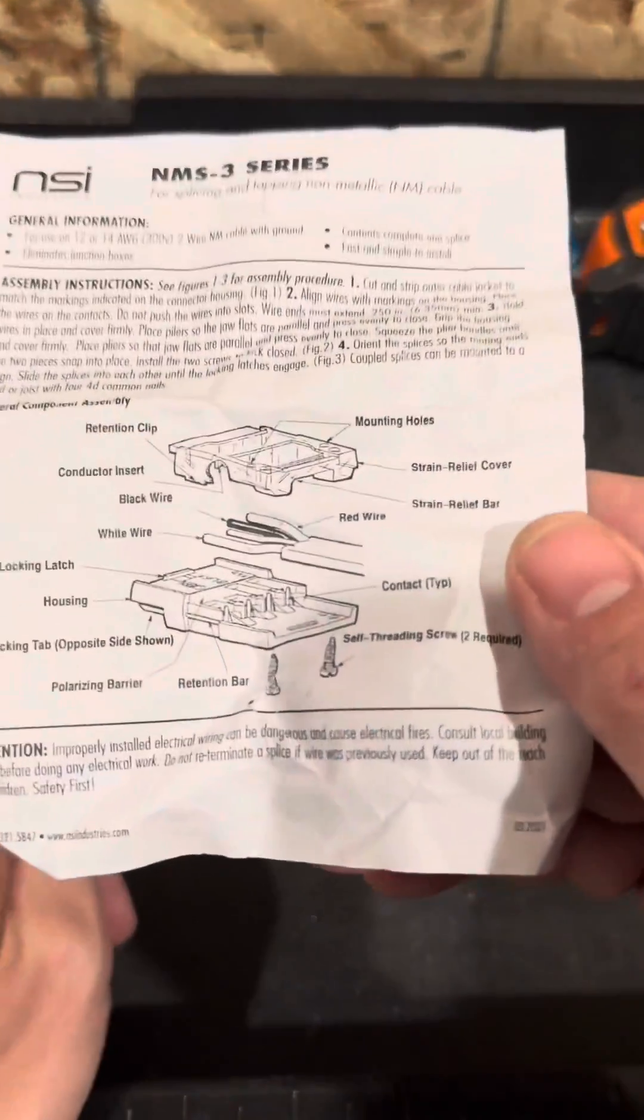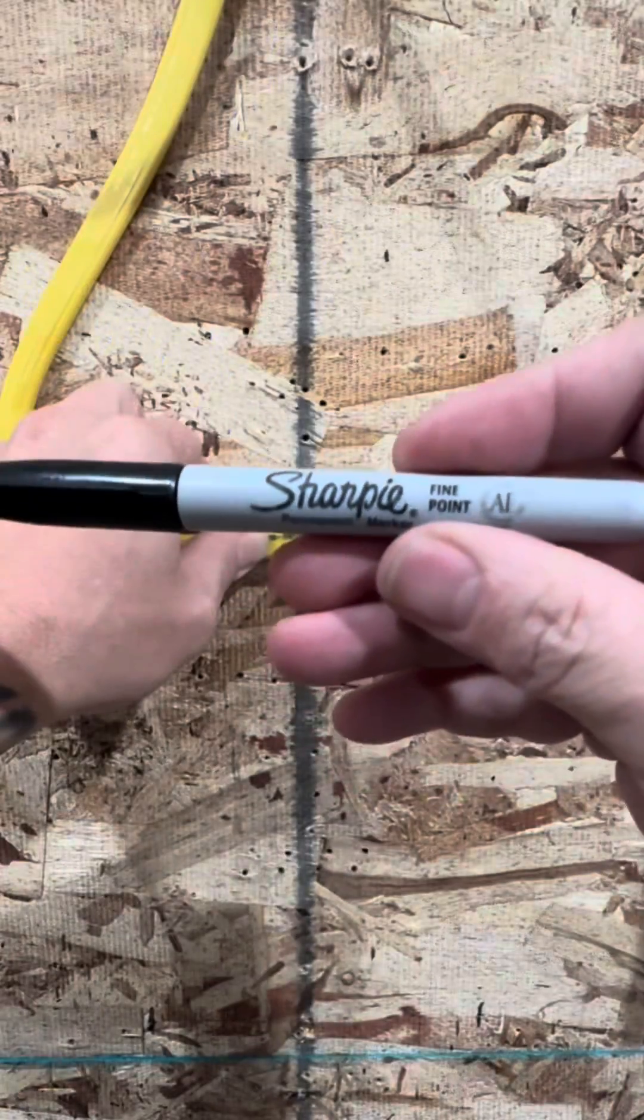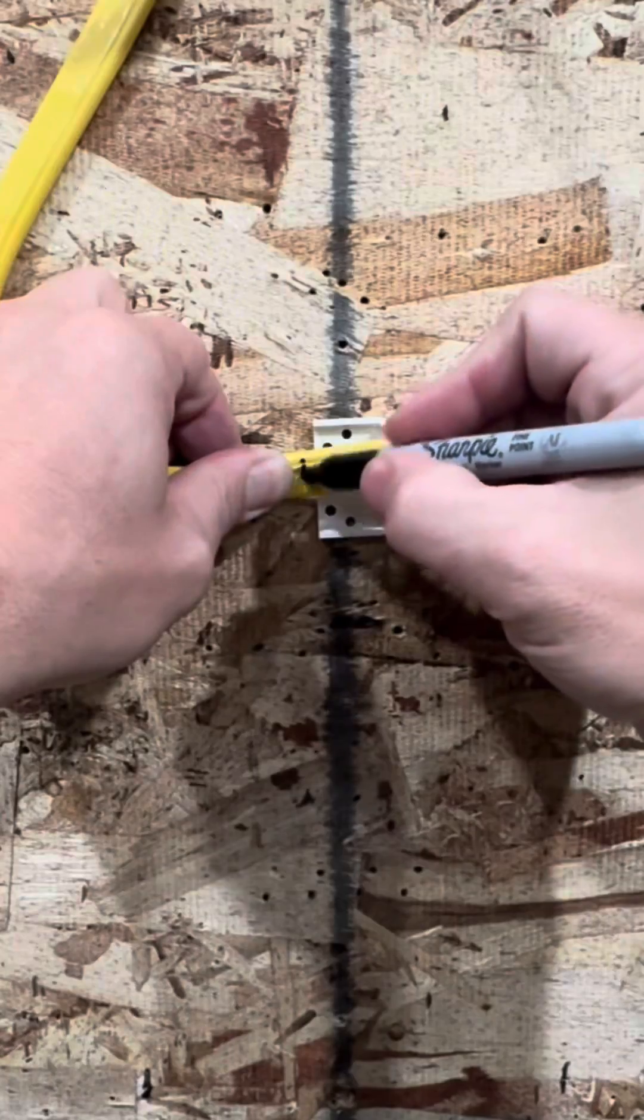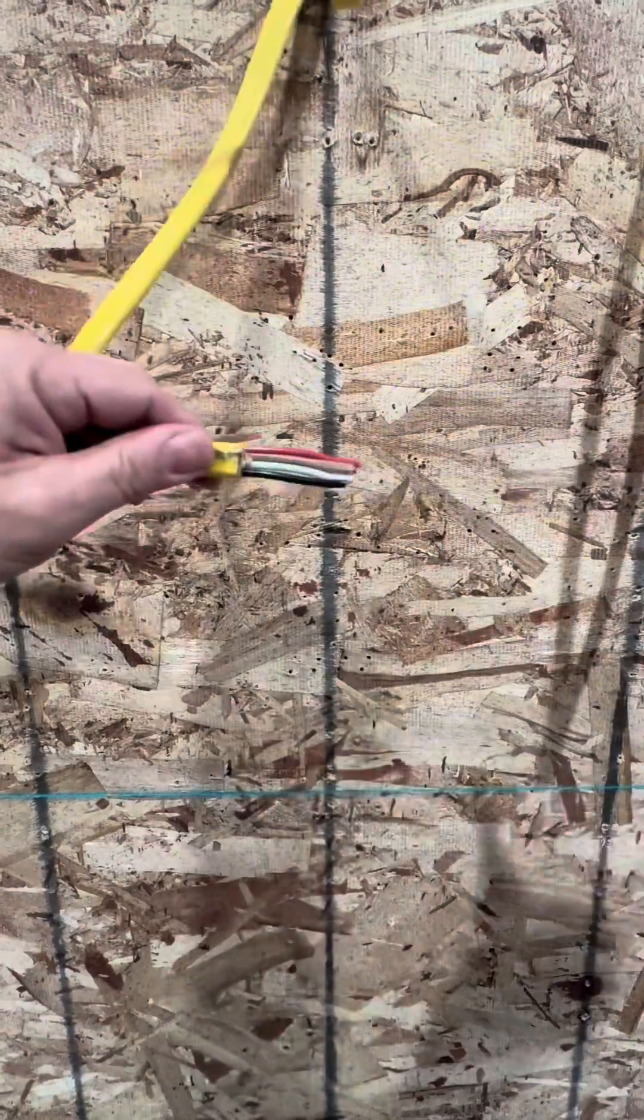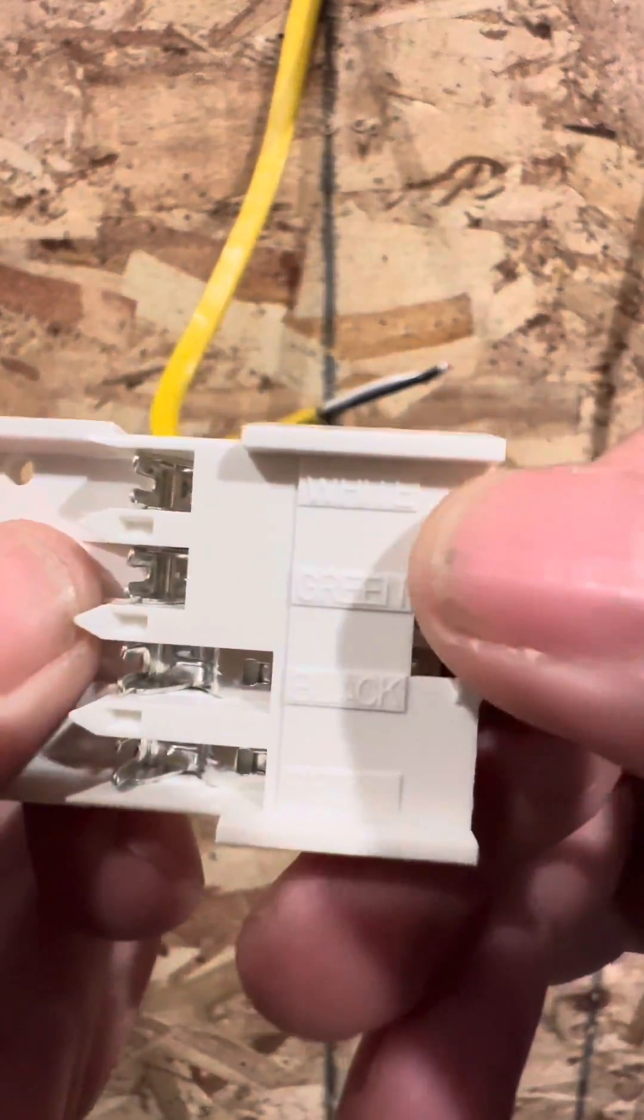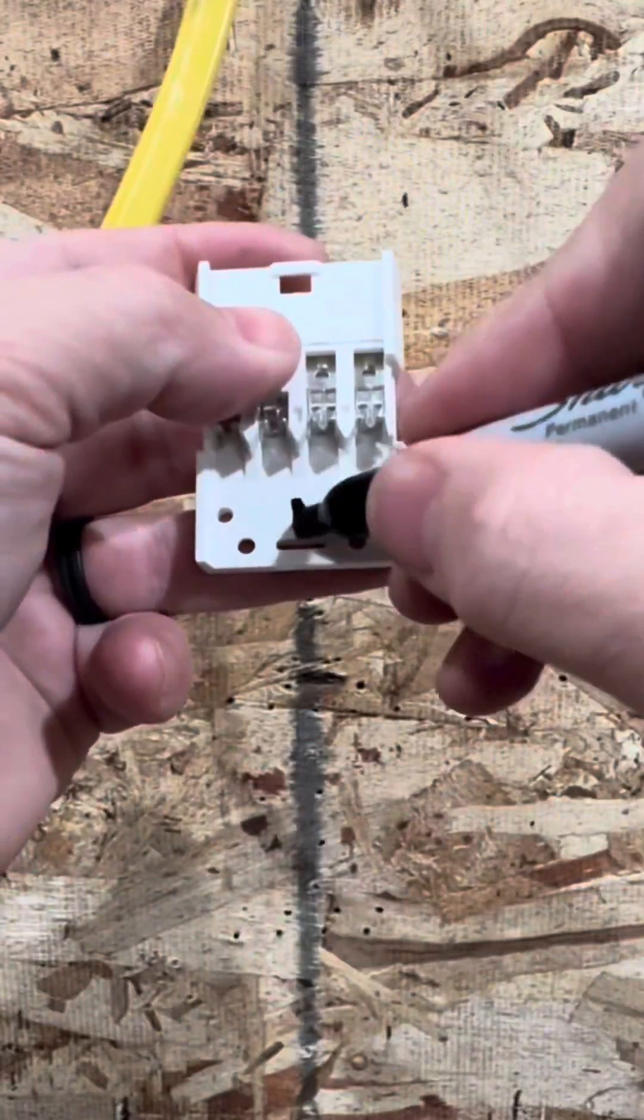First, we got to rip it open, make sure you got all the parts there, read the instructions if you don't know how to install it. Don't worry, I got you. Go ahead and mark where you want to take off the outside sheathing where it fits right inside that connector piece and go over any important information in the instructions.